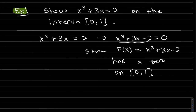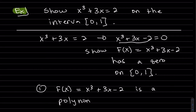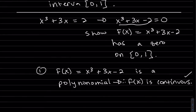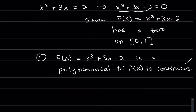Now that we have a function, our first step is to show f(x) is continuous. Well, f(x) is a polynomial, which implies that it's continuous — check, that's our first condition. Our second condition is that the endpoints have different signs, so let's find f(0) and f(1).